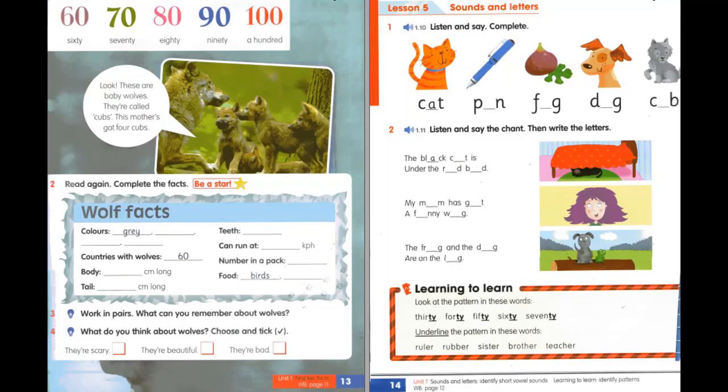Track 1.11. Unit 1, Lesson 5, Activity 2. The black cat is under the red bed. My mum has got a funny wig. The frog and the dog are on the log.